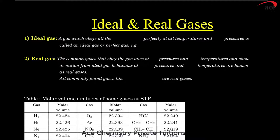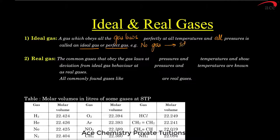So we come to the discussion of ideal gases and real gases. What are ideal gases? They are those which obey all the gas laws at all temperatures and all pressures. They are called ideal gases or perfect gases. What is an example of an ideal gas? There is no gas in the world which is an ideal gas.